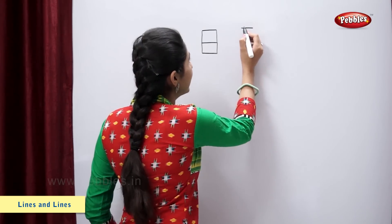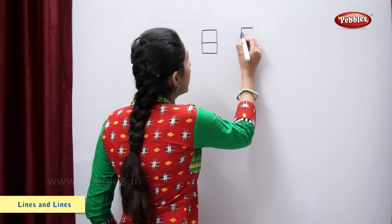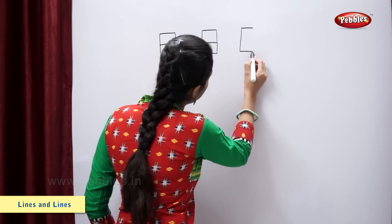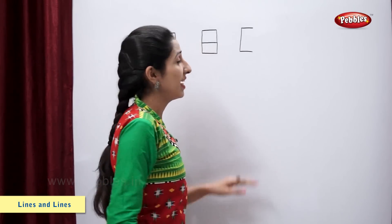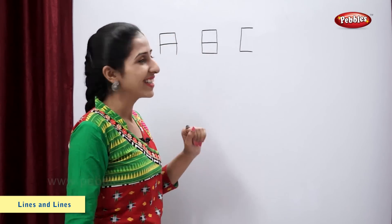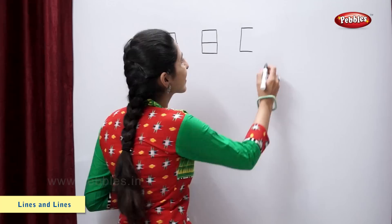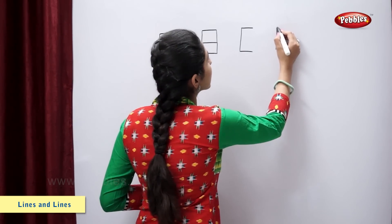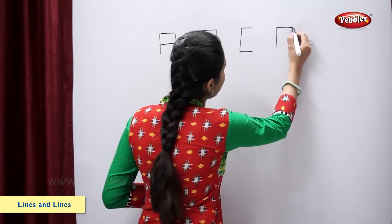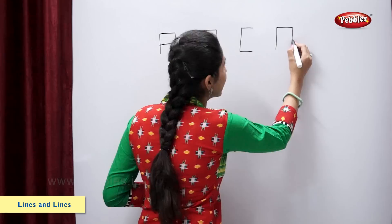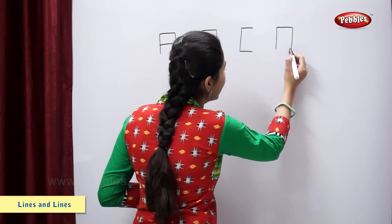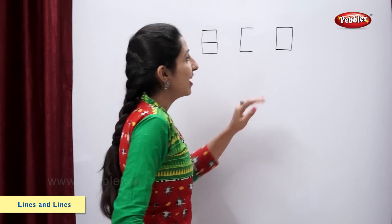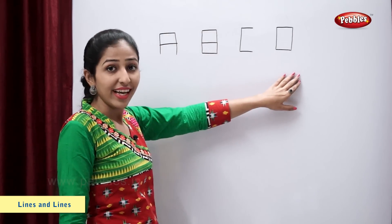Sleeping line, standing line, one more sleeping line — letter C. Standing line, sleeping line, standing line, sleeping line — letter D.